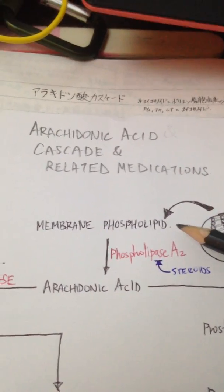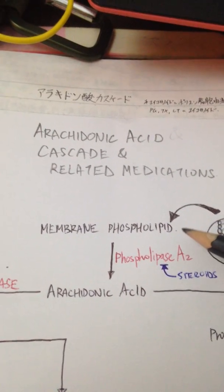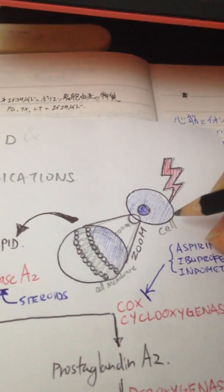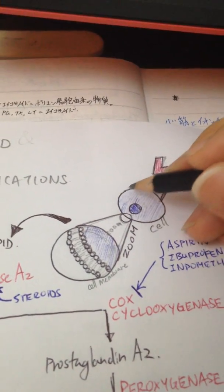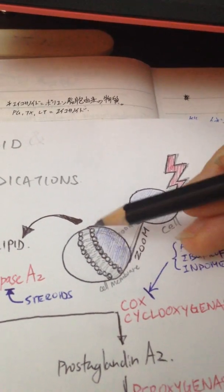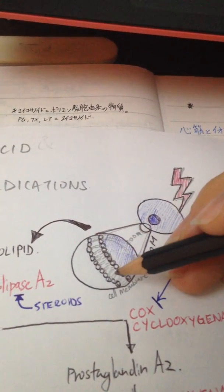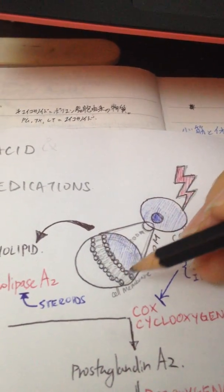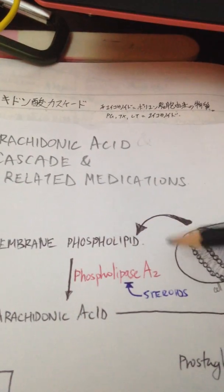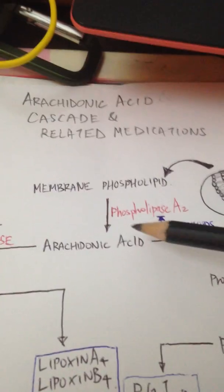You might ask what is the source of membrane phospholipid. It's actually on the cell membrane. We have this thing called a phospholipid bilayer, and when the cell receives injury, these cell membranes will be broken down by phospholipase A2, an enzyme, into arachidonic acid.